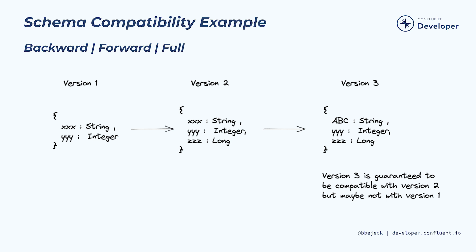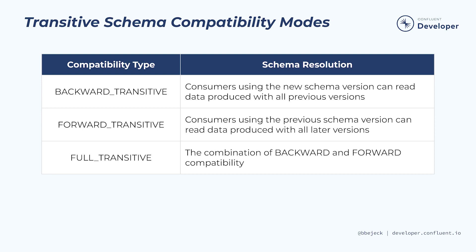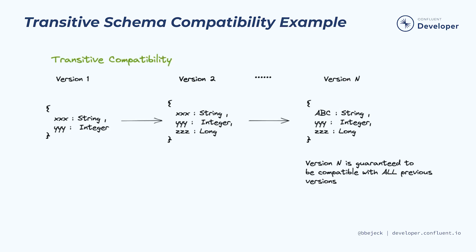When version 3 is registered, Schema Registry will only verify that it is compatible with version 2. Compatibility with other previous versions is not verified by default. But there are also three transitive modes that are extensions of the three primary modes. These modes extend the compatibility requirement to all previous or future schema versions. The difference with transitive compatibility is that the latest version of a schema that's just been updated is verified to be compatible with all previous versions, not just the immediately previous one.